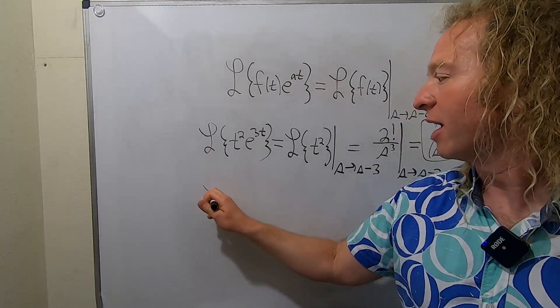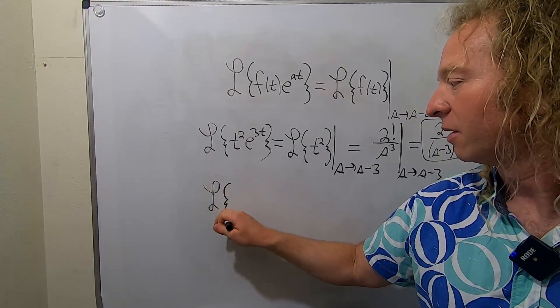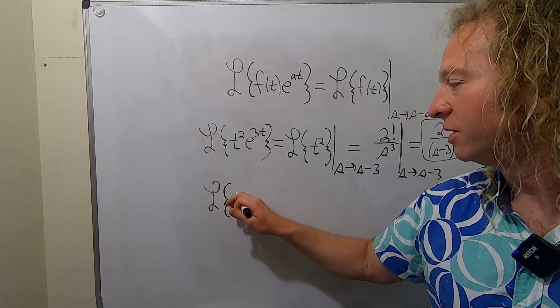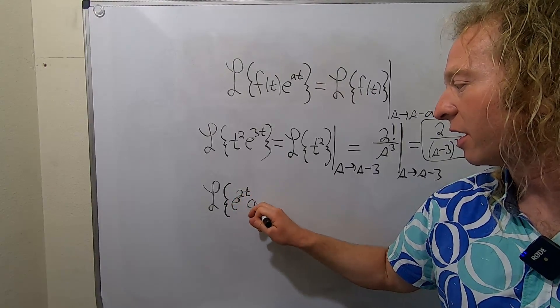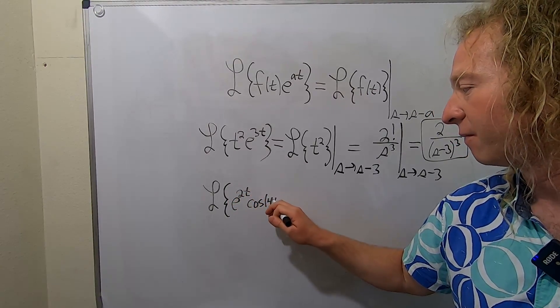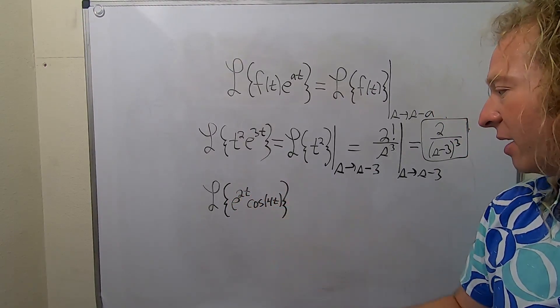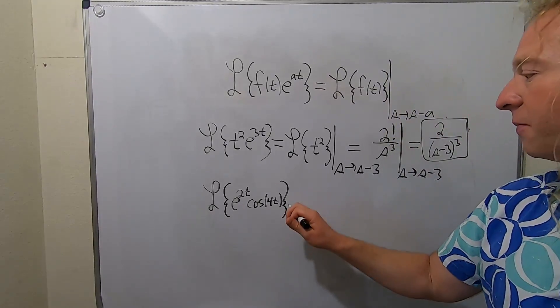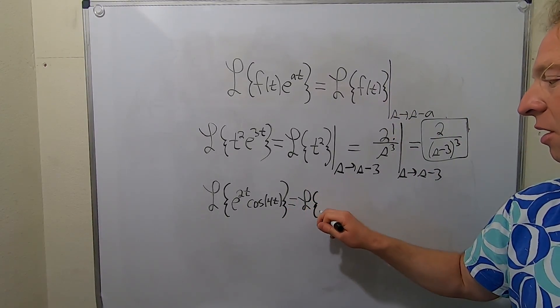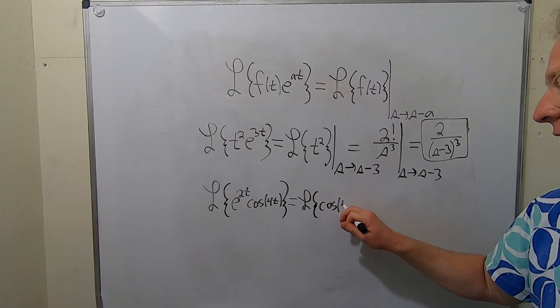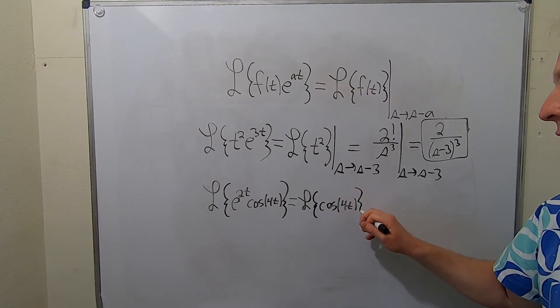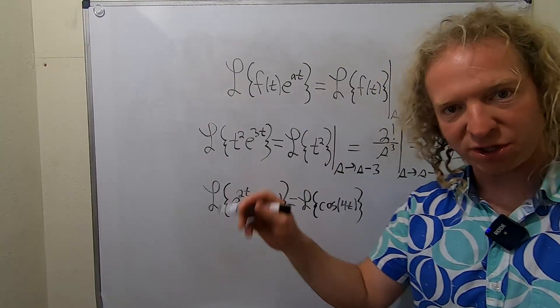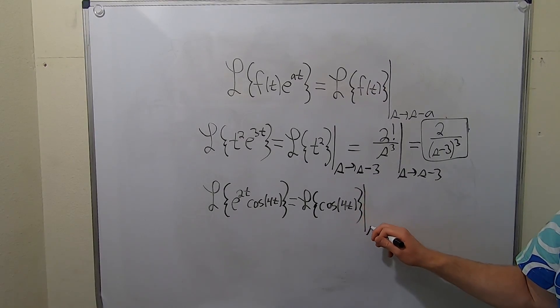Let's do another one. Say you have the Laplace of e to the 2t cosine 4t. So again, as before, you can just drop the e. So this is the Laplace of cosine 4t. And then you replace the e with the shift. So you draw the line and you go from s to s minus 2.